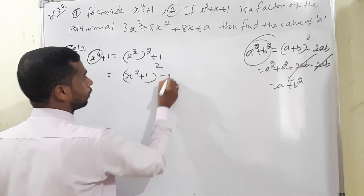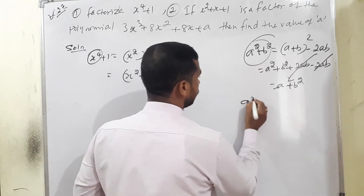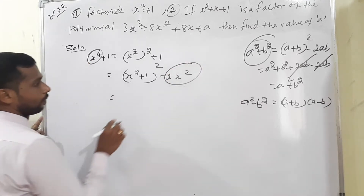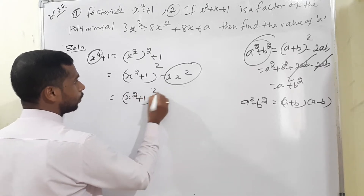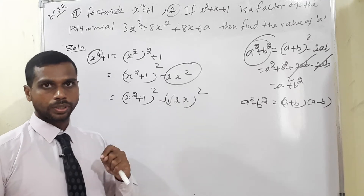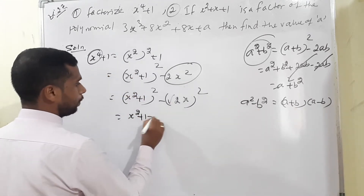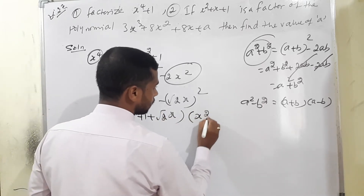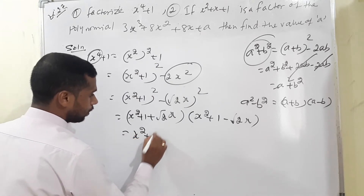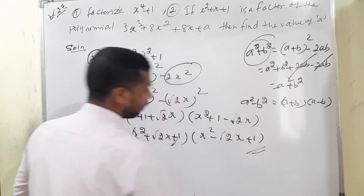We write (x²+1)² - (√2·x)². Now applying the identity a²-b² = (a+b)(a-b): (x²+1+√2x)(x²+1-√2x), which rearranges to (x² + √2x + 1)(x² - √2x + 1). This is the answer for question 1.